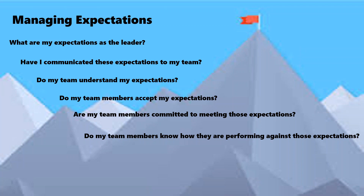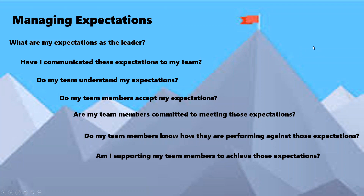The final question is: am I supporting my team members in achieving those expectations? You are the person most likely to be able to remove barriers and roadblocks in your organisation and make things easier for people. If you're not doing that, you're abrogating your responsibility as a team leader. So shared vision or shared purpose — the first category — needs to be backed up by clarity about what is expected. The second characteristic is open communication.